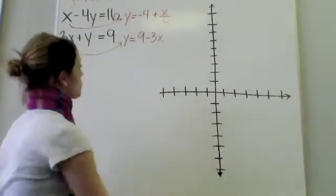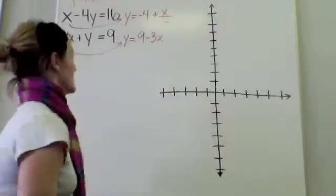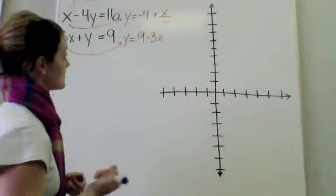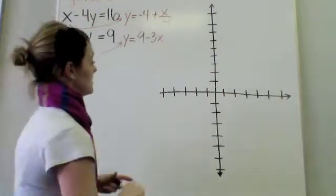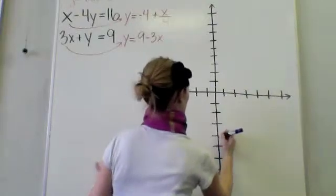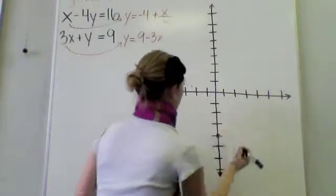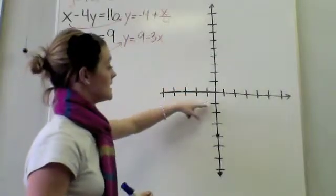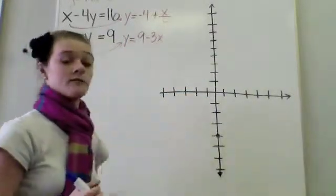what I need to do is first I'm going to look at their y-intercept. My first one, y equals negative 4 plus x over 4. My y-intercept for this guy is going to be at negative 4. 1, 2, 3, 4. So you see what I did was I look at my y-axis, because he's negative 4, and then my negative y values, and I go to negative 4.